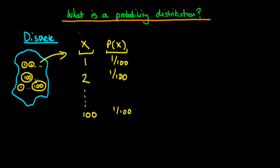What we have here is a list of all the different values our random variable x can take on, with a probability associated with each of those values. This is a mapping from the random variable value onto a probability. We could also think of a graphical way of illustrating this information in a slightly neater form.